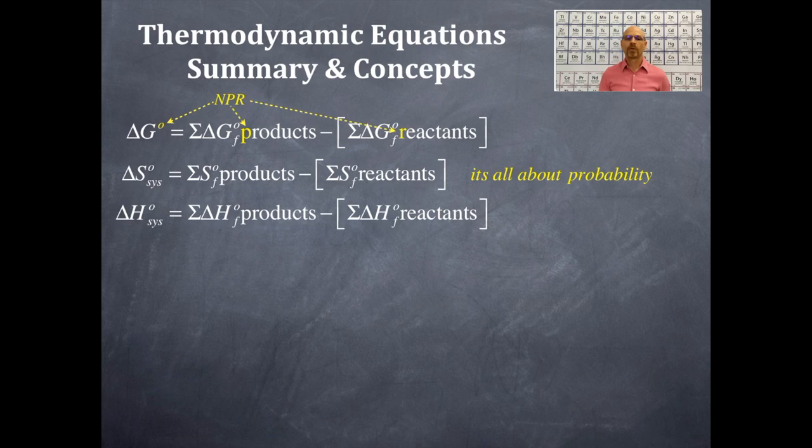Delta H naught, that's enthalpy. So delta H naught for the system is equal to the sum of the delta H naught for the formation of products minus the sum of the delta H naught for the formation of the reactants. Notice that all three of these equations, Gibbs free energy that's delta G, S naught that is the entropy, and delta H naught that is the enthalpy, all of these are products minus reactants.